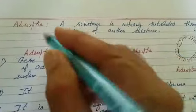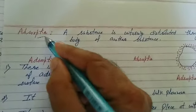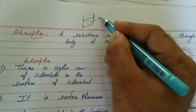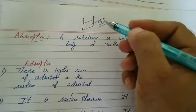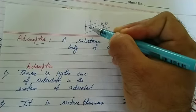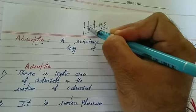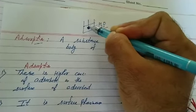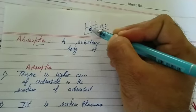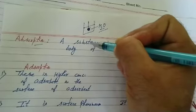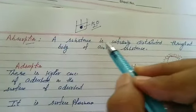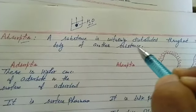Next term is absorption. Consider a beaker containing water. If I dissolve a piece of chalk in it, the chalk piece will eventually dissolve. We call this process absorption — a substance is uniformly distributed throughout the body of another substance.